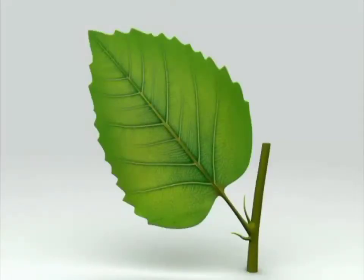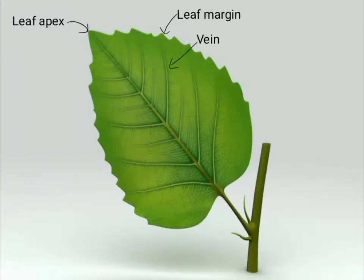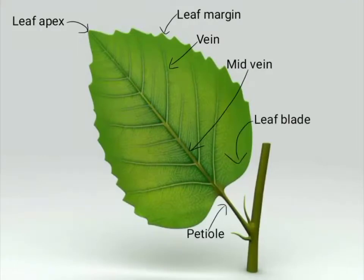There are 8 parts of a leaf. They are leaf apex, leaf margin, vein, mid vein, leaf blade, petiole, stipule and leaf base.